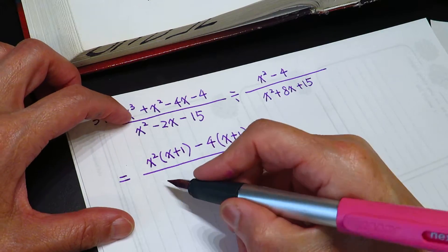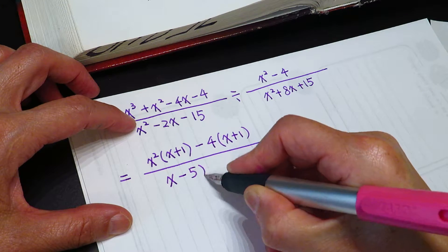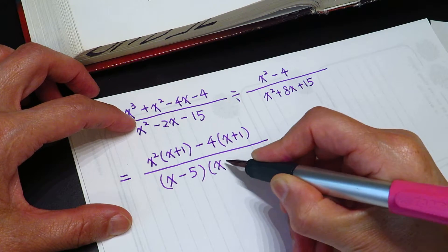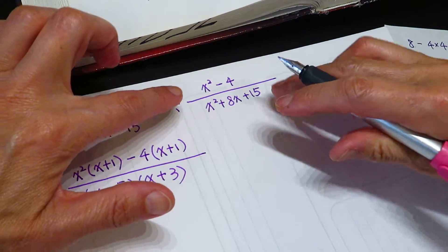one we can divide it already. We can factor it already. x minus 5 times x plus 3. And here